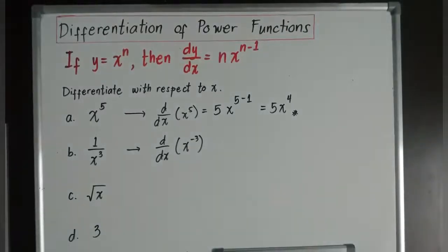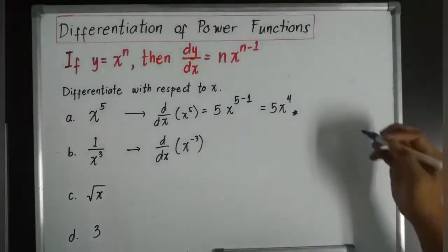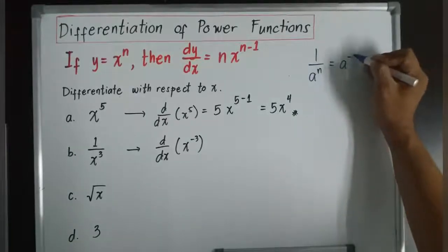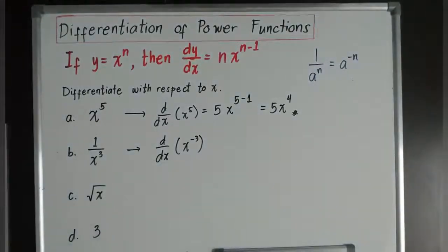Remember that, one of your rules in mathematics is that, or the laws of indices, 1 over a to the power of n is equivalent to a to the power of negative n. It is very important to recall all these laws because, remember, mathematics is an induction method. So whatever you have learned before, you might be applying it now.